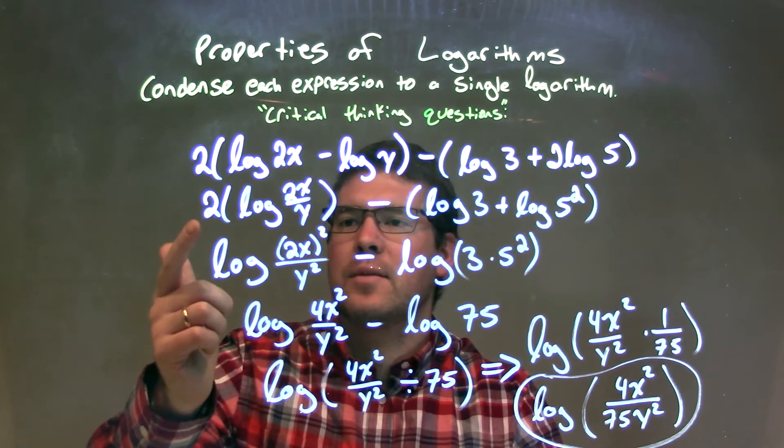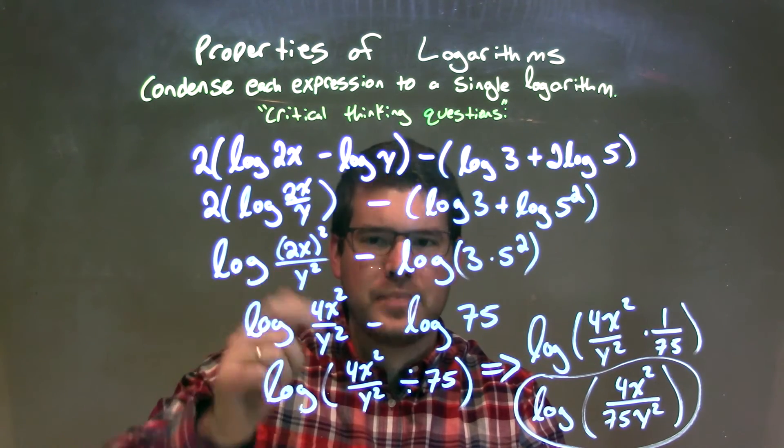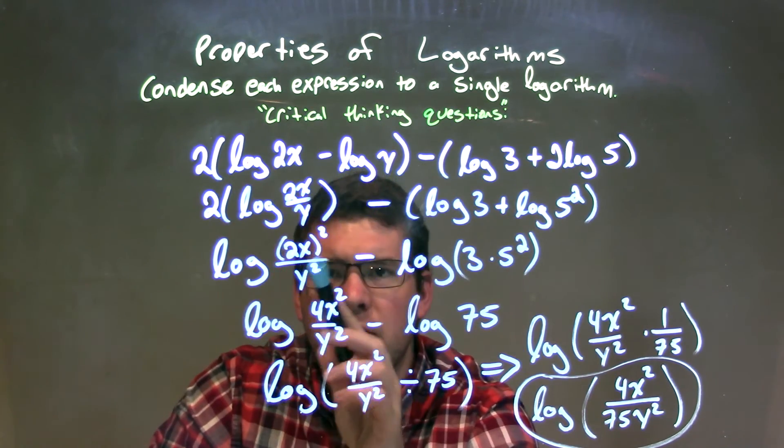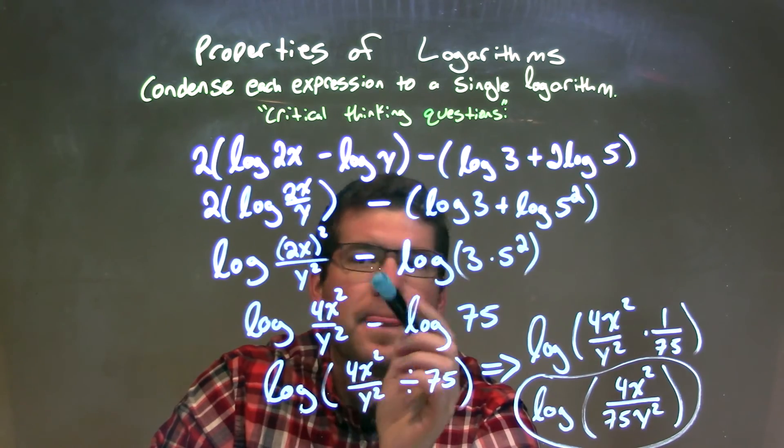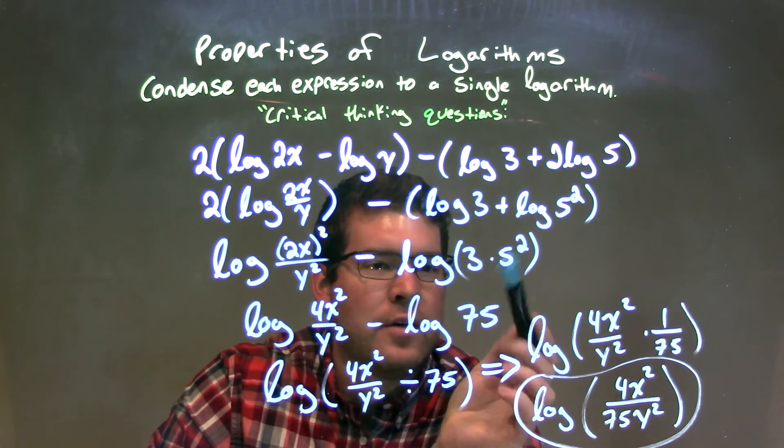And this one, I took the power of the 2 that's out front and made it the power of both the numerator and the denominator. Now, I simplified both of them right here, in this step here. So 2x all squared became 4x squared. And then 3 times 5 squared was 75.